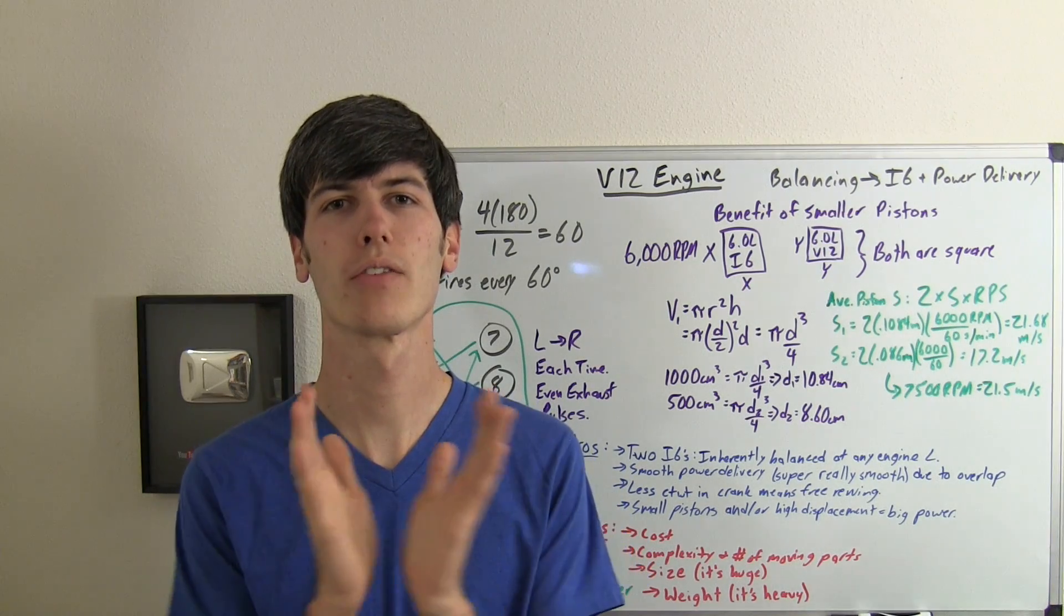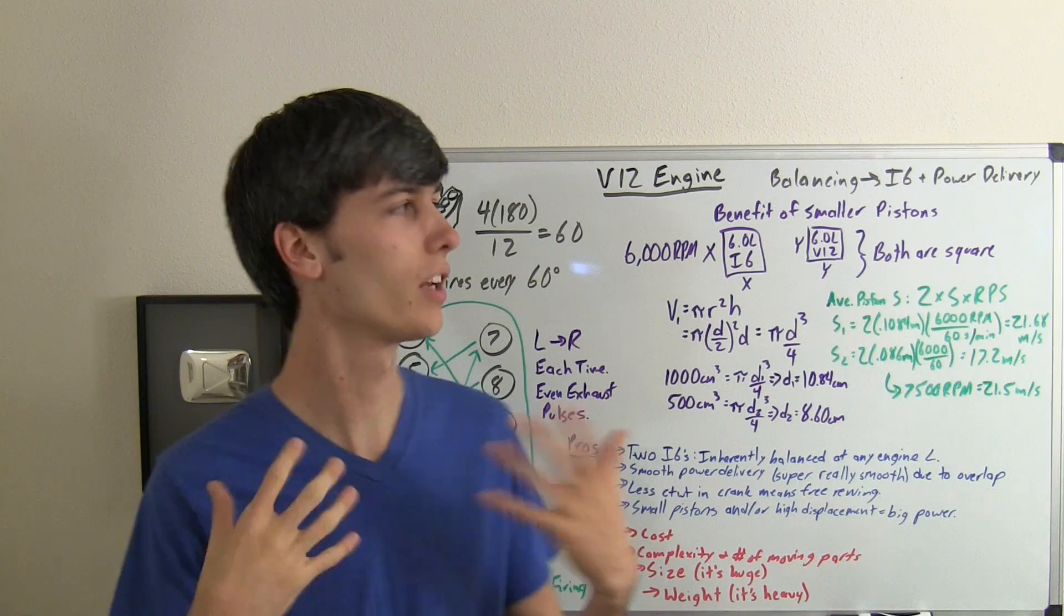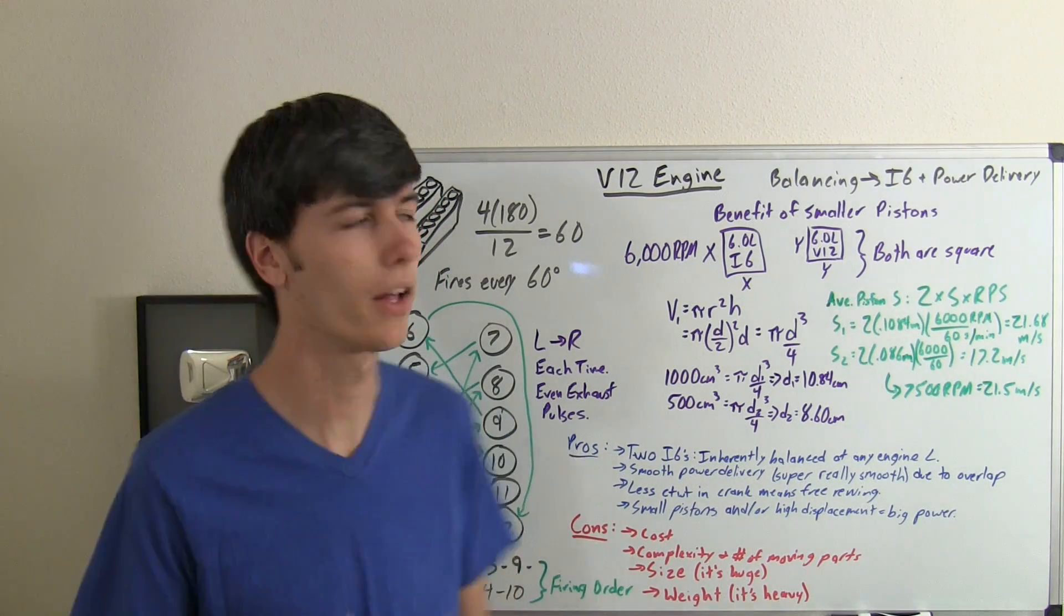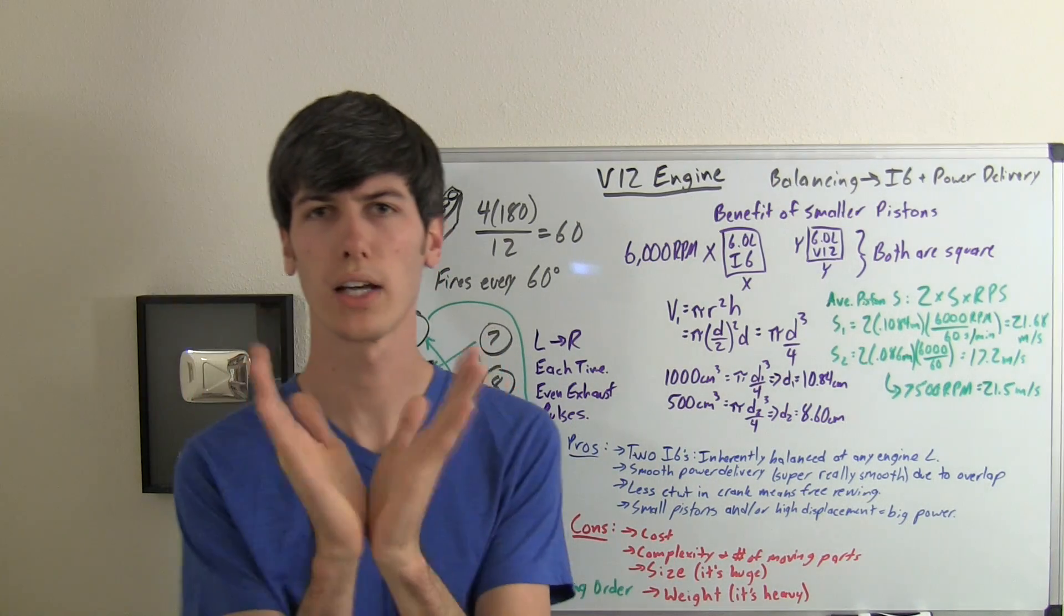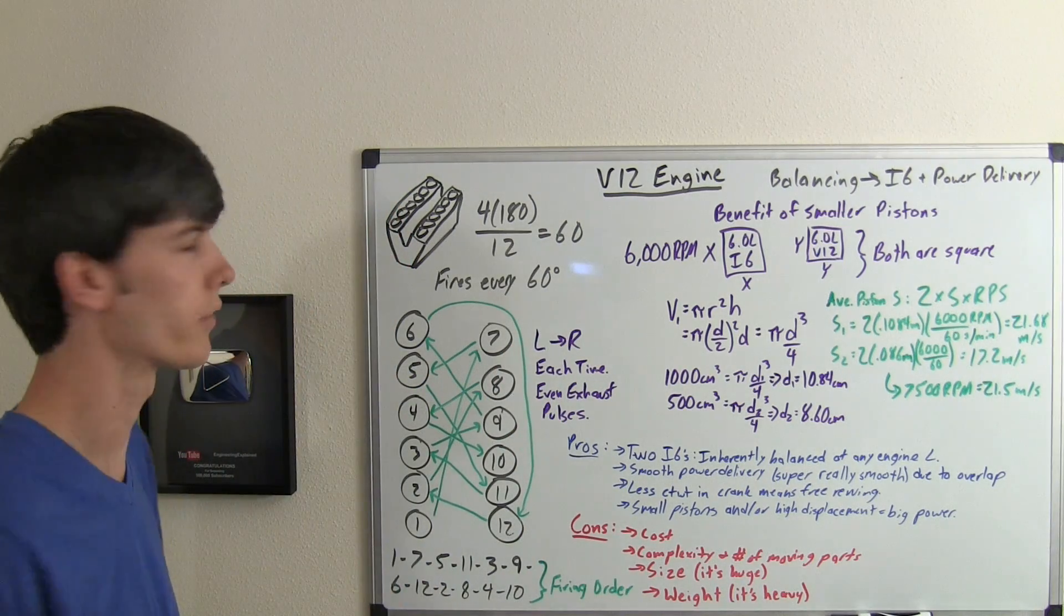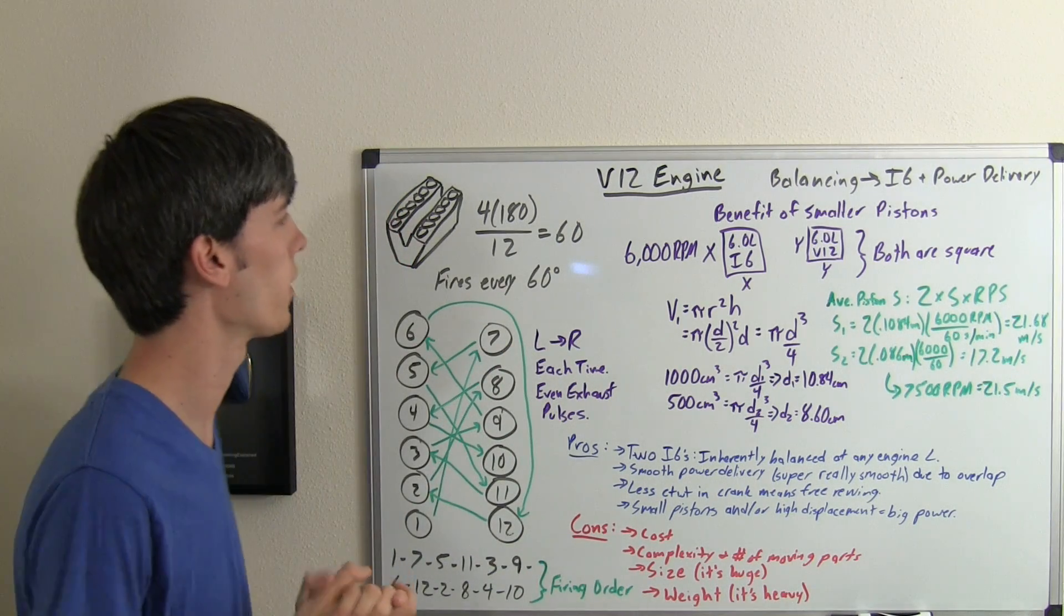Now the orientation of the V in a V12 engine can be at any angle, because an inline 6-cylinder engine is inherently balanced, and a V12 is simply two inline 6-cylinders mated together to a common crankshaft. So let's talk about the firing interval.